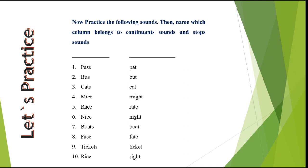Very good, it's the first column. The first column where we have pass, bus, cats, mice, race, nice, boats, face, tickets, and rice belongs to the continuant sounds.